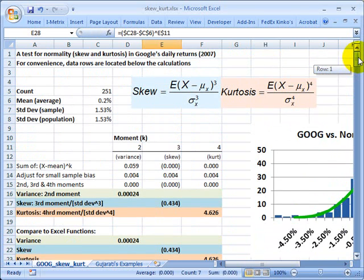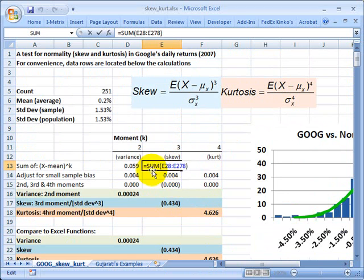I come back up here, here's the summation of those, and then I divide it by something very close to the number of observations with an adjustment for the small sample.